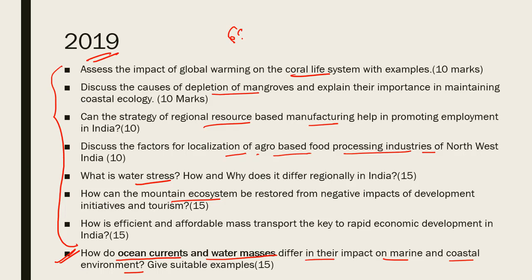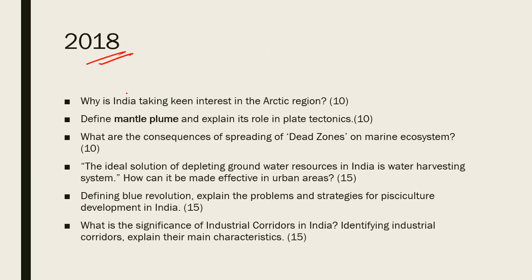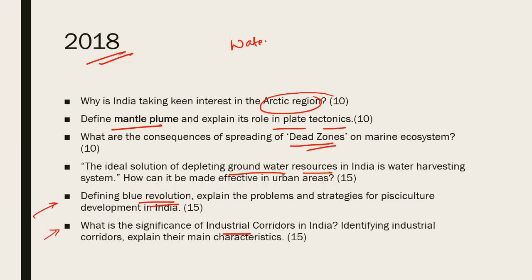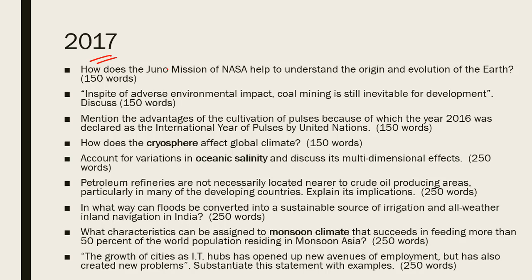GS1 paper looks like a static subject but it has not remained static because of geography, which is highly dynamic. In 2019, just one question came from the static part. The 2018 paper also has a core geography question from mantle plume and its role in plate tectonics. Everything else — India's keen interest in the Arctic region, dead zone ecosystems, blue revolution, significance of industrial corridors — was running in news. Water has become a very important topic for UPSC consecutively from 2016 onwards.